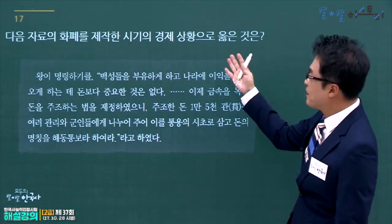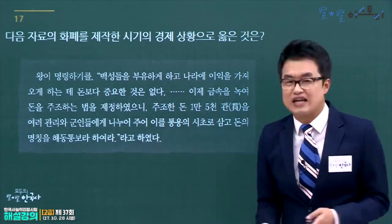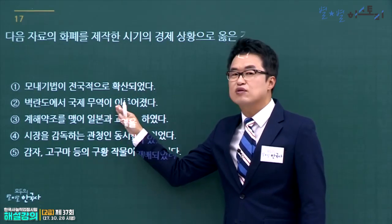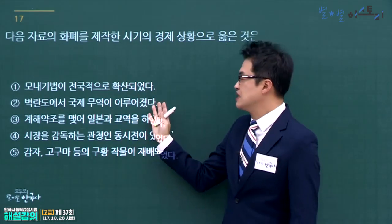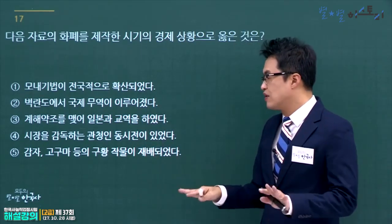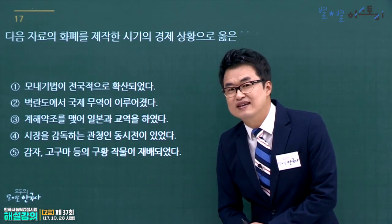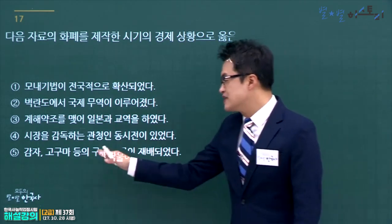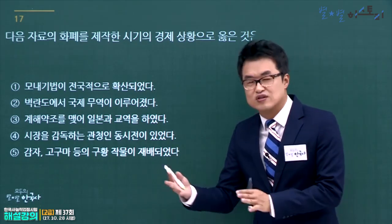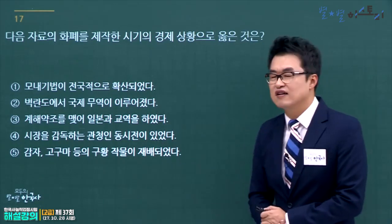해동통보를 제작한 시기는 고려 시대입니다. 고려의 경제 상황을 고릅니다. 모내기법 전국 확산은 조선 후기, 계약조는 조선 세종대, 동시와 동시장 감독은 신라 지증왕, 감자·고구마 등 구황작물 재배는 조선 후기입니다. 고려 시대 경제 내용인 병란 관련 2번이 정답입니다.